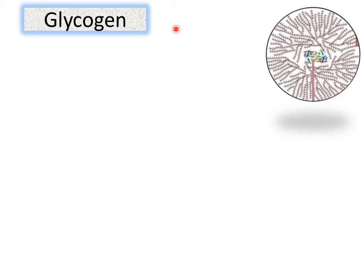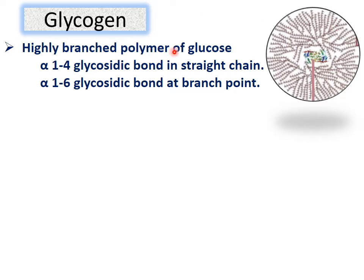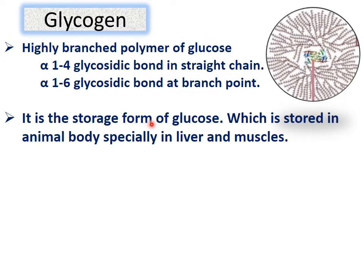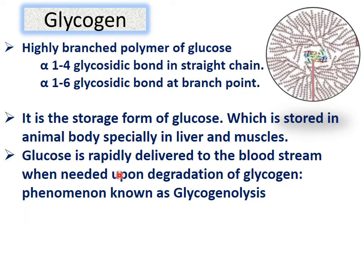Glycogen is a highly branched structure. Glycogenin is a protein at its core, and the branches are made of glucose forming this highly branched polymer. It has 1,4 glycosidic bonds in the straight chain and 1,6 glycosidic bonds at branch points. It is the storage form of glucose stored in the animal body, specially in liver and muscle. It is present only in animals, not in plants.